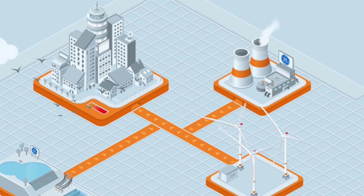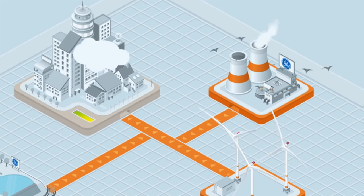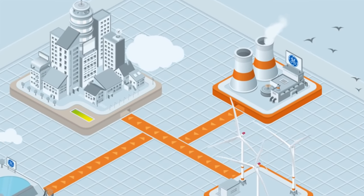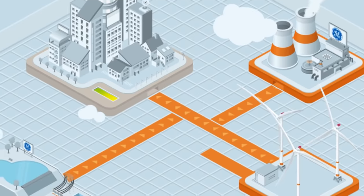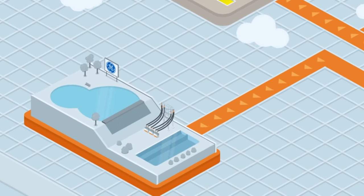When demand decreases at off-peak times, various energy sources keep producing power, a portion of which could go to waste. To avoid this, the surplus can be stored by a pumped storage hydroelectric plant.